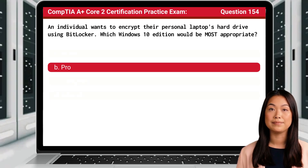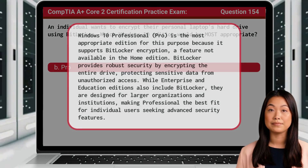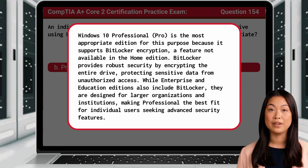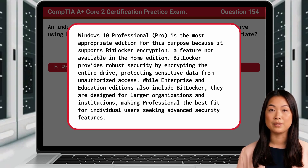The answer is B: Pro. Windows 10 Professional is the most appropriate edition for this purpose, because it supports BitLocker encryption, a feature not available in the Home edition. BitLocker provides robust security by encrypting the entire drive, protecting sensitive data from unauthorized access. While Enterprise and Education editions also include BitLocker, they are designed for larger organizations and institutions, making Professional the best fit for individual users seeking advanced security features.